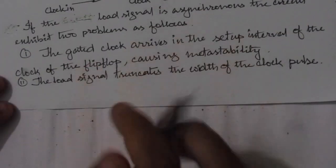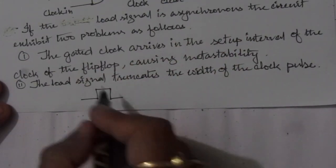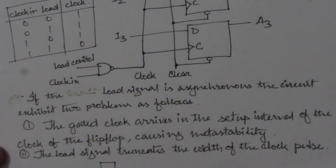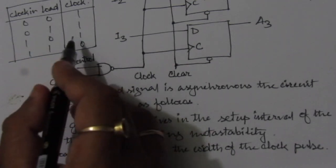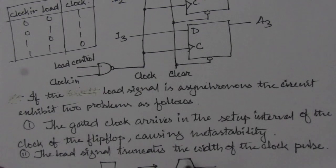suppose this is the input clock_in. Suppose this is the clock_in. So depending on this load signal, it will have transition from 1 to 0 and 0 to 1 like that. So here we can see that width of the clock pulse will now truncate it.